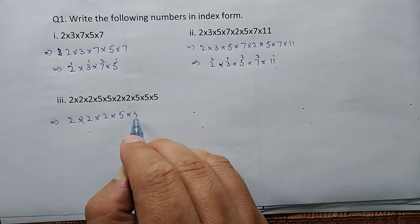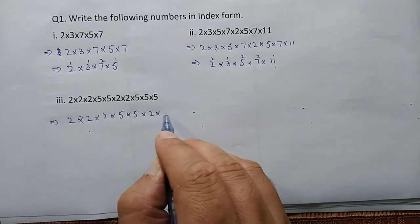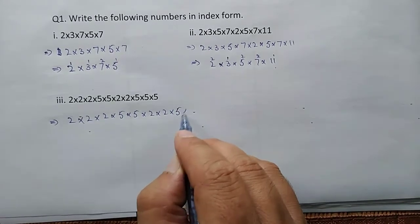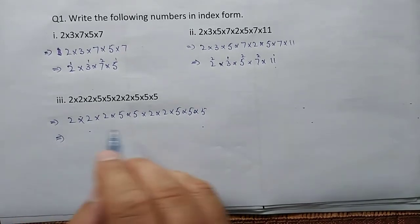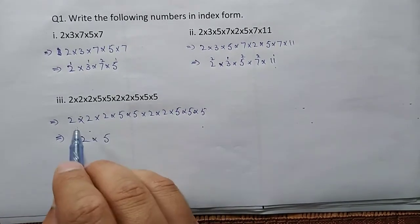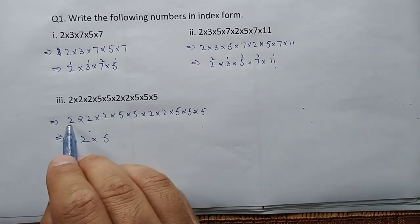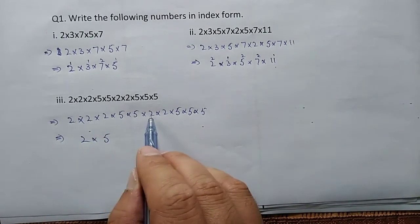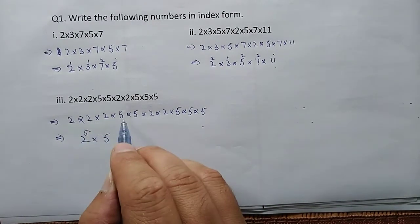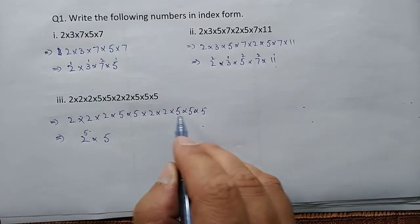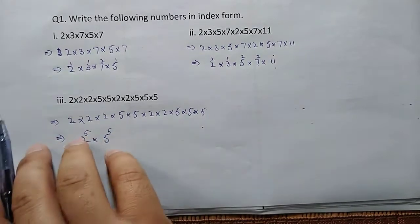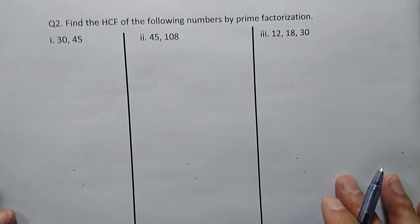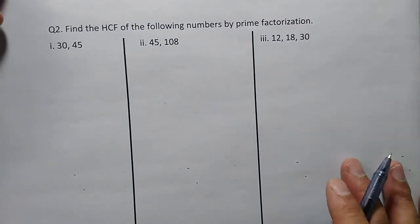Next: 5 × 5 × 2 × 5 × 5 × 5 × 5 × 5. Here our five appears — let me count — one, two, three, four, five times. So five appears five times and two appears one time. Now for the next part of question two.